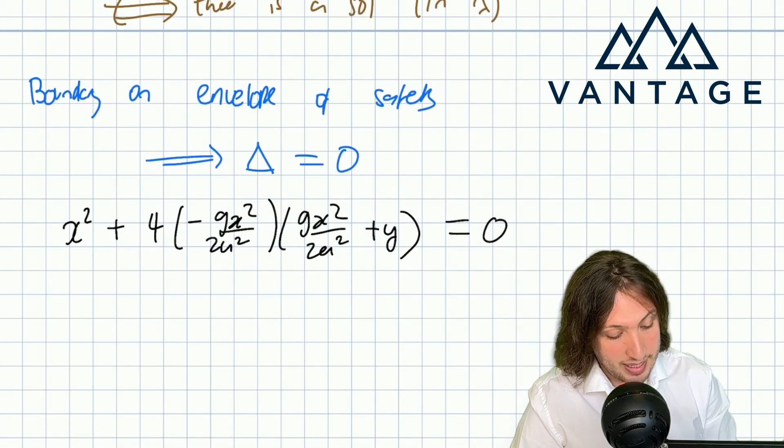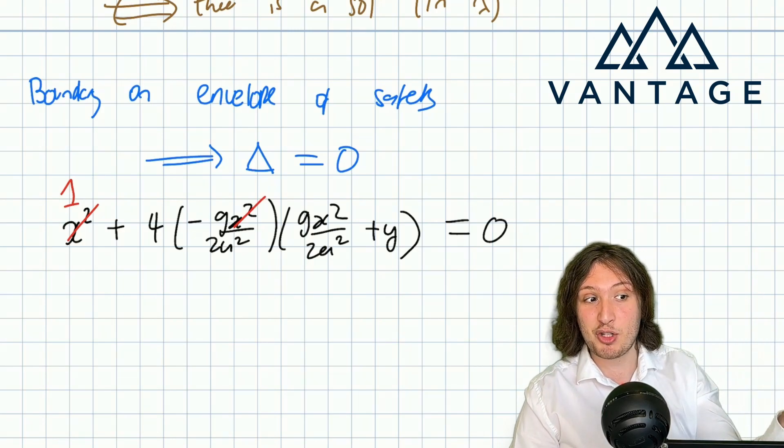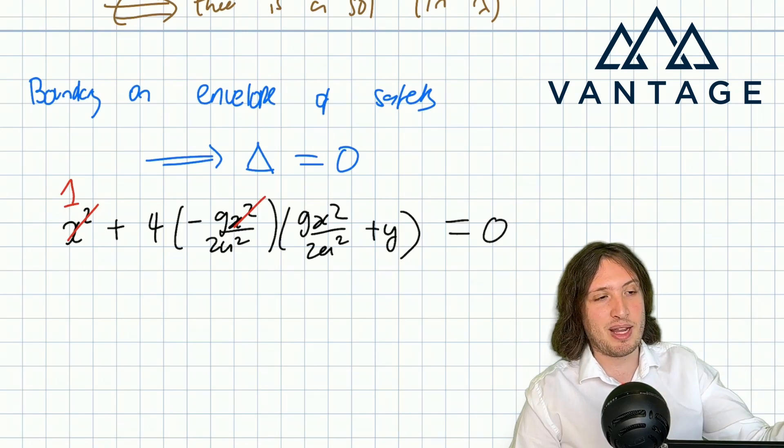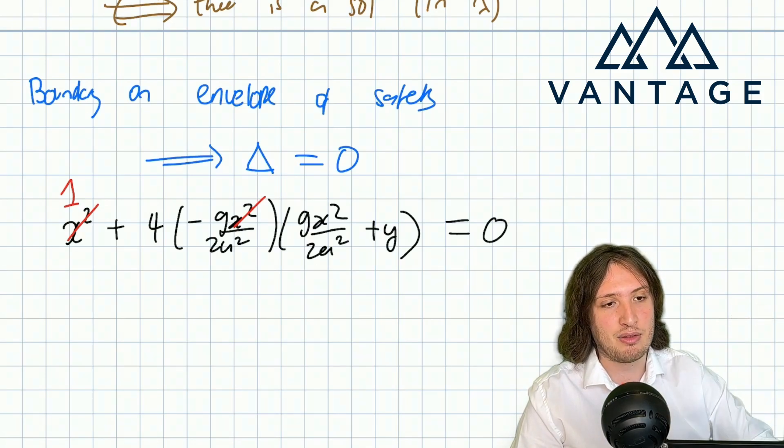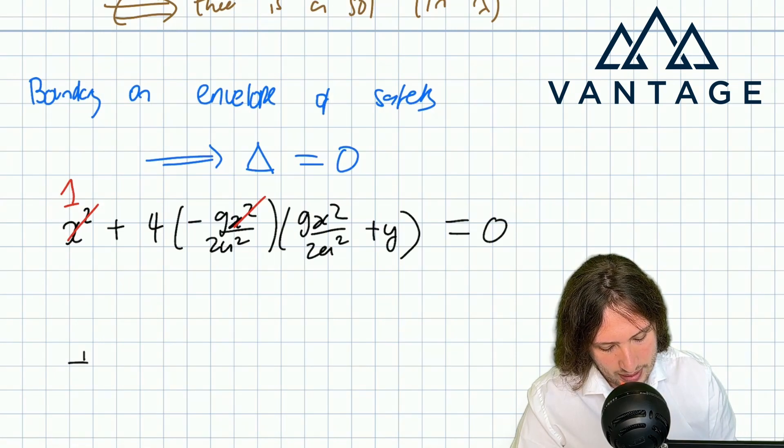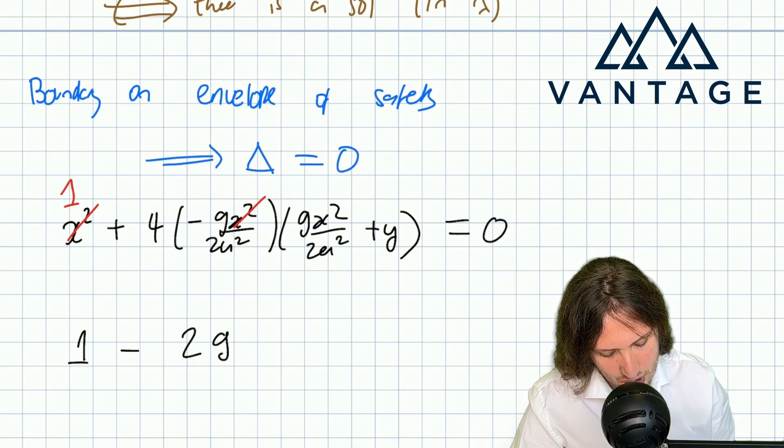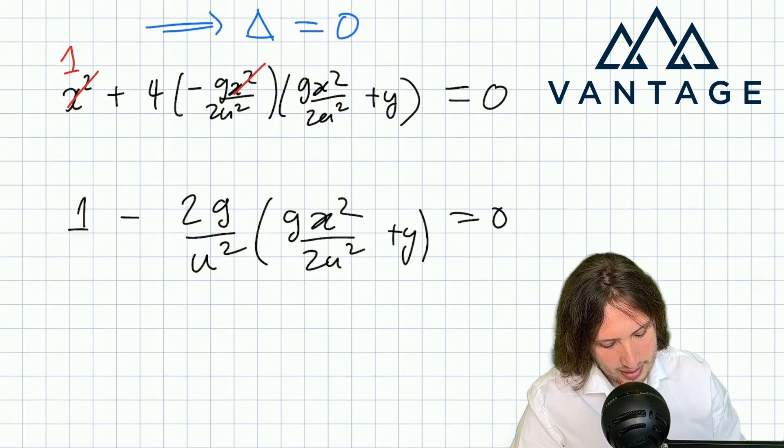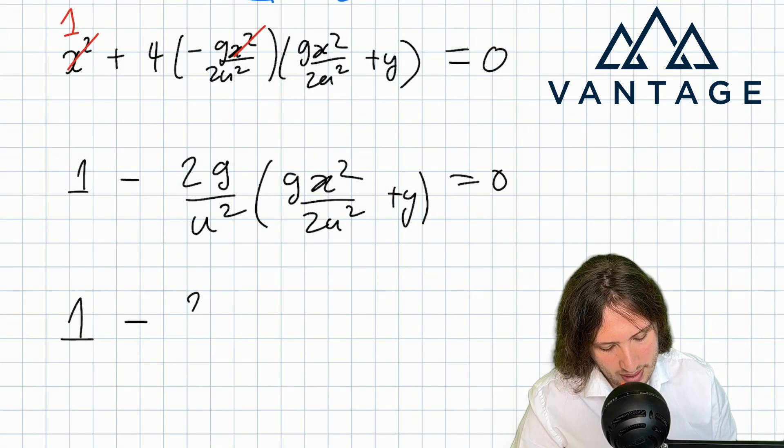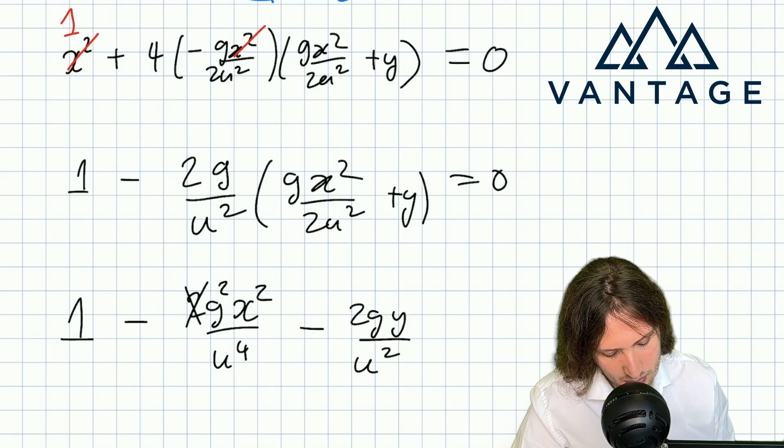So I get x² minus—I'll use that minus to turn that to a plus—that's minus 4ac but I've got another minus from the a giving me minus overall, so minus four times (minus gx² by 2u²) times (minus gx² by 2u² plus y) equals zero. I cancel through an x². I'm not worried about x² being zero because there are lots of points where x is not zero and this equation has to be true for every point on the envelope of safety. So I've got 1 minus 2g over u² times (gx² by 2u² plus y) equals zero.